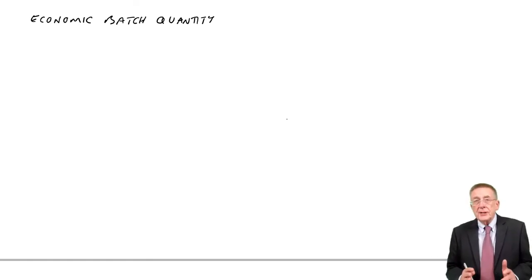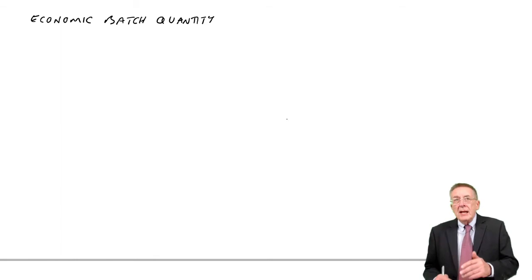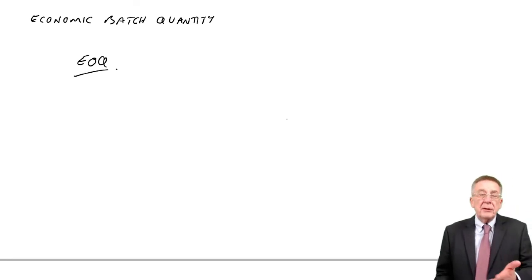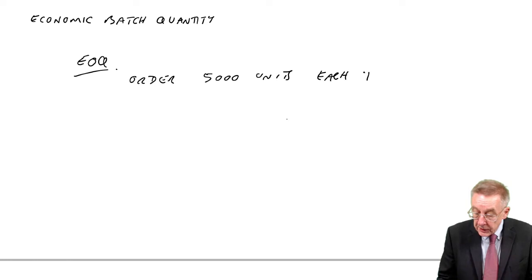In the previous two lectures, we were looking at the economic order quantity. At the very beginning, I explained that if we had economic order quantity here, if I told you that, for example, we were ordering 5,000 units each time.